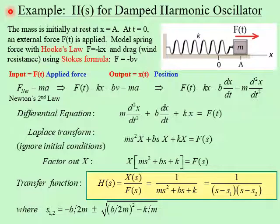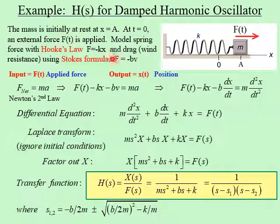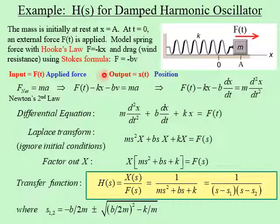Now let's do a more difficult and very different type of system — the transfer function for a damped harmonic oscillator: a mass on a spring, initially at rest at position A. At T equals zero we apply an external force F of T. We model the spring force using Hooke's law as minus K times X, and drag using Stokes' formula where the drag force equals minus B times velocity V. The input is the applied force F of T and the output is the position of the mass X of T.